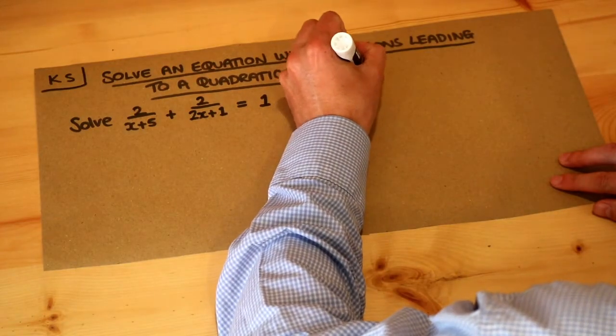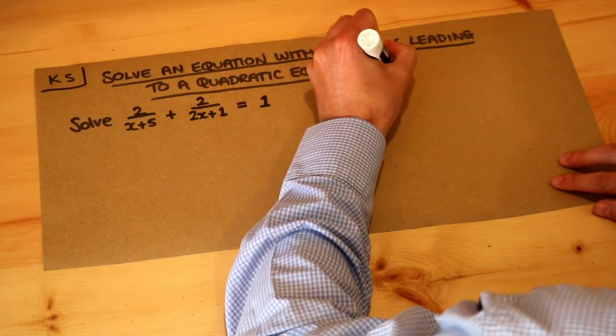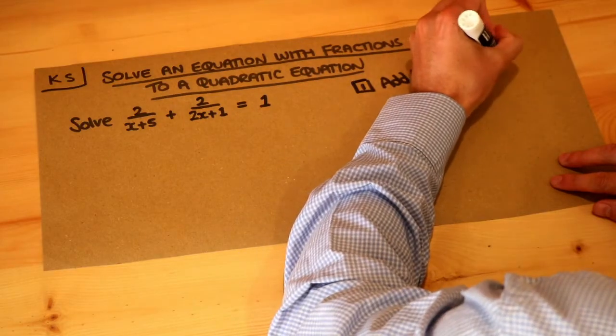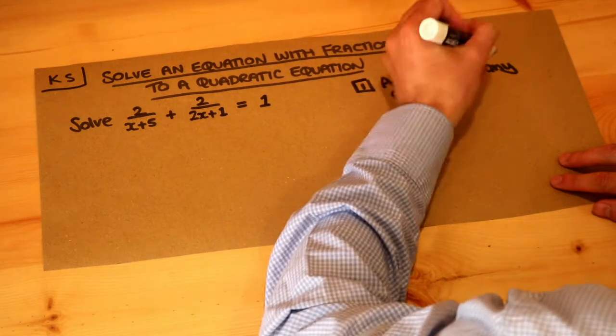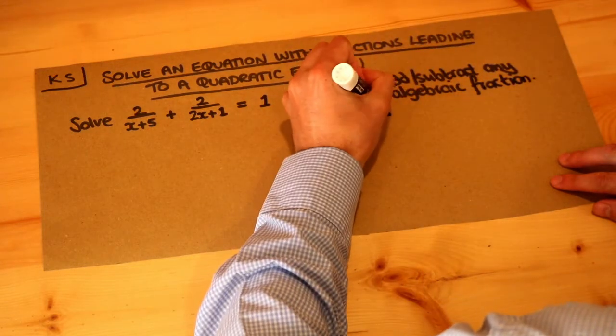So step one is to add or subtract any algebraic fractions. The next step, which we'll get to in a bit, is to multiply through by the denominator.